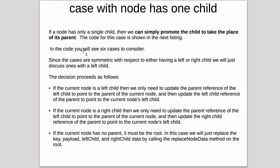In the code, we'll see six cases to consider. Since the cases are symmetric with respect to either left or right child, we're just going to discuss the ones for the left child. The decision process looks like this: if the current node is a left child, then we only need to update the parent reference of the left child to point to the parent of the current node, and then update the left child reference of the parent to point to the current node's right left child.